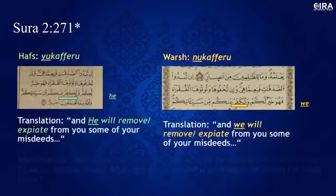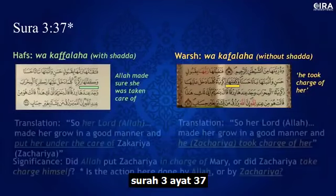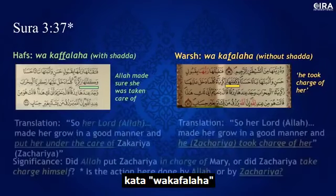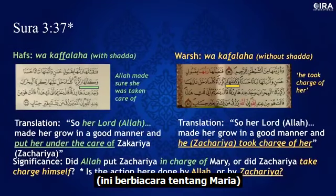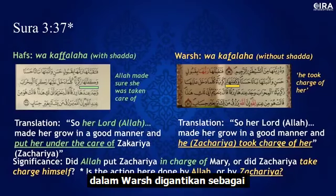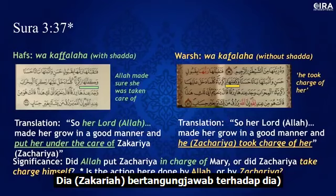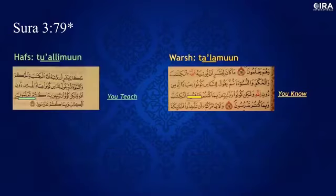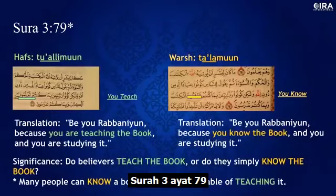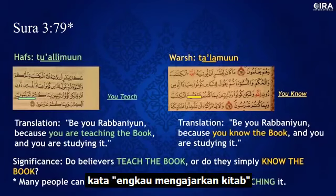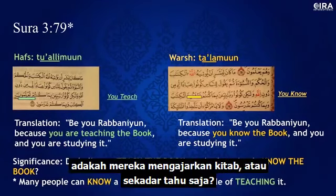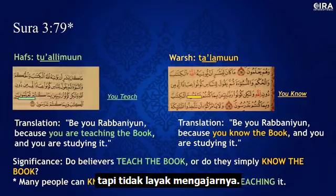In Surah 3, regarding Mary, Hufs has 'her Lord made her grow in a good manner and put her under the care of Zachariah' — God is the active subject. In Warsh it changes to 'Zachariah took charge of her' — making Zachariah the active subject. Did Allah put Zachariah in charge of Mary, or did Zachariah take charge himself? One is active, one is passive. In Surah 3:79, Hufs says 'be you Rabbaniun because you are teaching the book.' Warsh changes it to 'you know the book.' Do believers teach the book, or do they simply know it? Many people know a book but are not capable of teaching it.